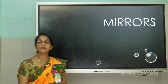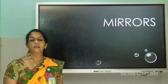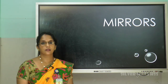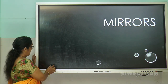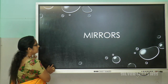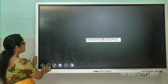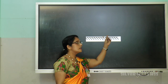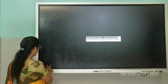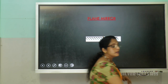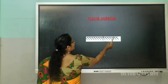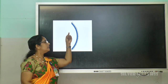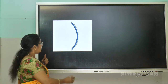In this session we are dealing more about mirrors and the different types of mirrors. According to the surface of the mirrors, we can differentiate them. Some mirrors have flat surfaces and some have curved surfaces. Mirrors which have a flat surface are called plane mirrors — their reflecting surface is plane or flat.